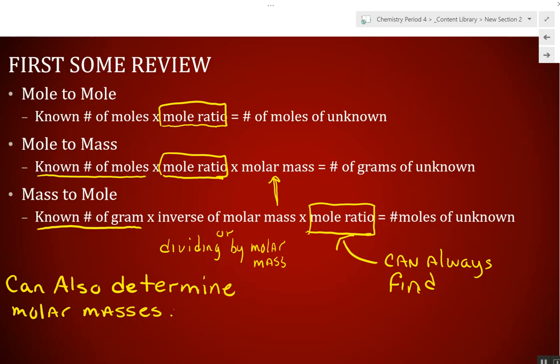You can always find the mole ratio and you can also determine molar masses. You're always going to be able to find as much stuff as you need to get down to that one unknown. Basically, what we're doing now is taking this equation and this equation, overlapping them, to give us mass-to-mass.